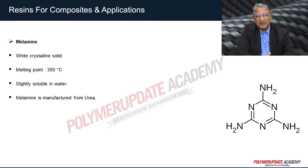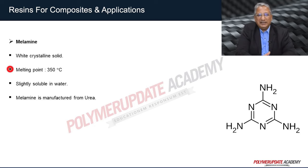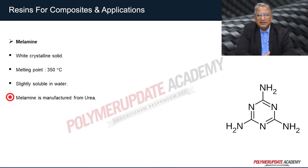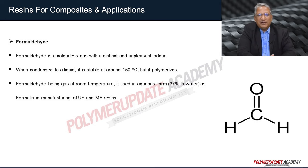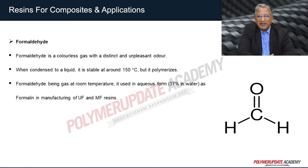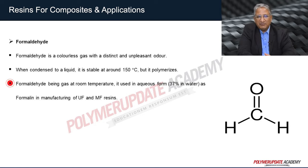Melamine is used for manufacturing melamine formaldehyde resin. It is a white crystalline solid with a melting point of 350°C and is slightly soluble in water. Melamine is manufactured by trimerization of urea. Another raw material for manufacturing amino resins is formaldehyde, which is a colorless gas with a characteristic pungent and irritating odor. It is stable at 150°C, but polymerizes to a liquid. Since formaldehyde is a gas at room temperature and difficult to handle, it is used as a 37% aqueous solution when manufacturing urea formaldehyde or melamine formaldehyde resin.